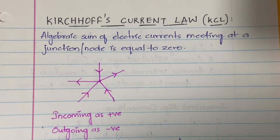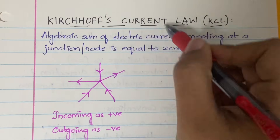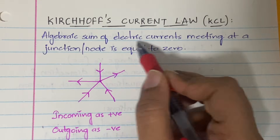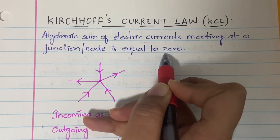Hello everyone, welcome back to my YouTube channel Trouble Free. In today's video we are going to learn about Kirchhoff's Current Law. In the previous video I explained about Kirchhoff's Voltage Law, which is KVL, and its related examples. Now let us learn Kirchhoff's Current Law, which is in short called KCL, along with an example. Kirchhoff's Current Law says that the algebraic sum of the electric currents meeting at a junction or node is equal to zero.